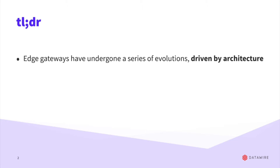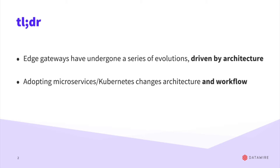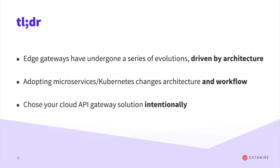Over the past 20 or so years, architectures have clearly changed. Adopting microservices and Kubernetes, moving to that cloud-native way of working, not only changes the architecture — microservices and functions — but also the workflow changes too. And therefore you need to choose your cloud API gateway solution intentionally.